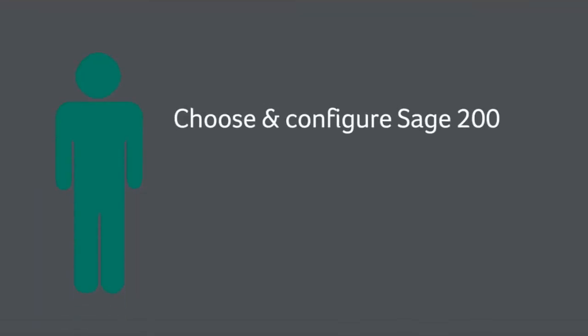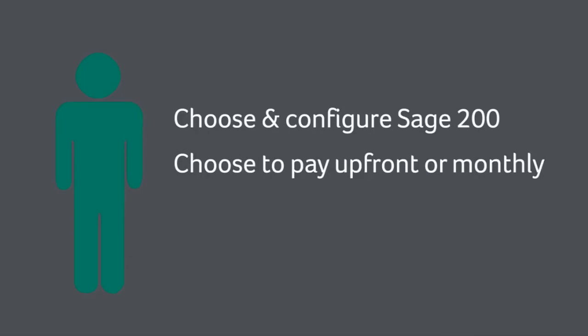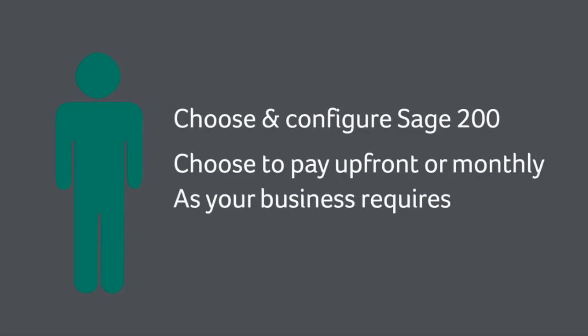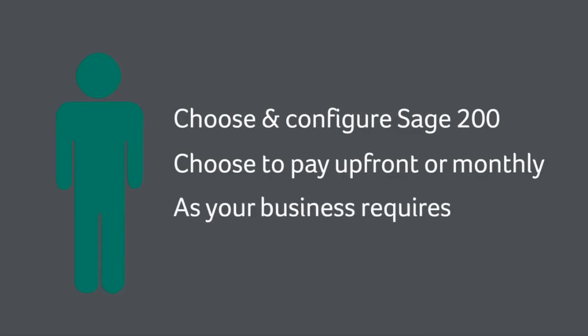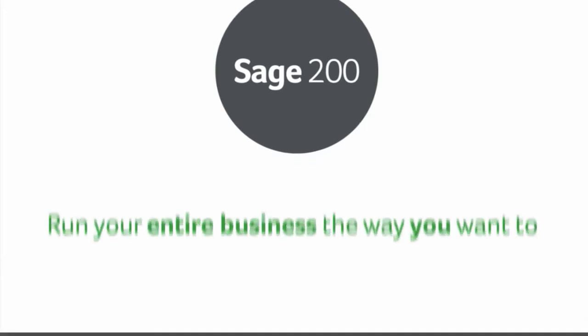Choose and configure Sage 200's range of elements to suit the size and nature of your business. Choose to pay upfront or pay monthly. Paying monthly allows you to flex users and functionality up or down as your business requires. Sage 200 enables you to make the choices you need to run your entire business the way you want to.